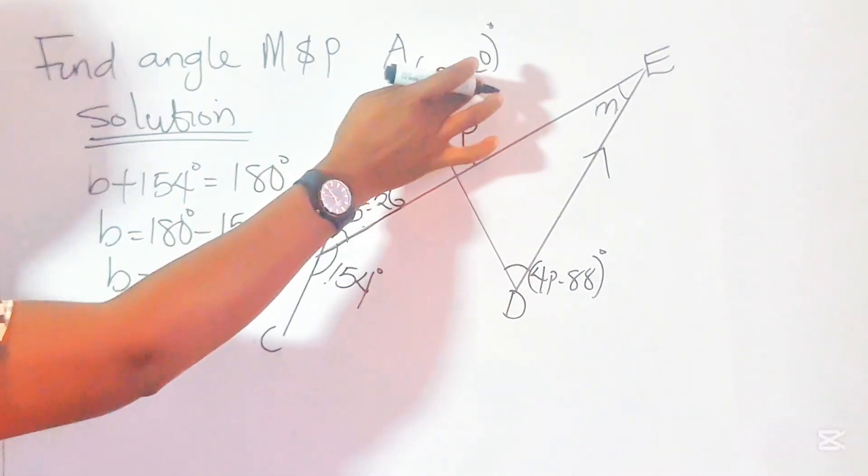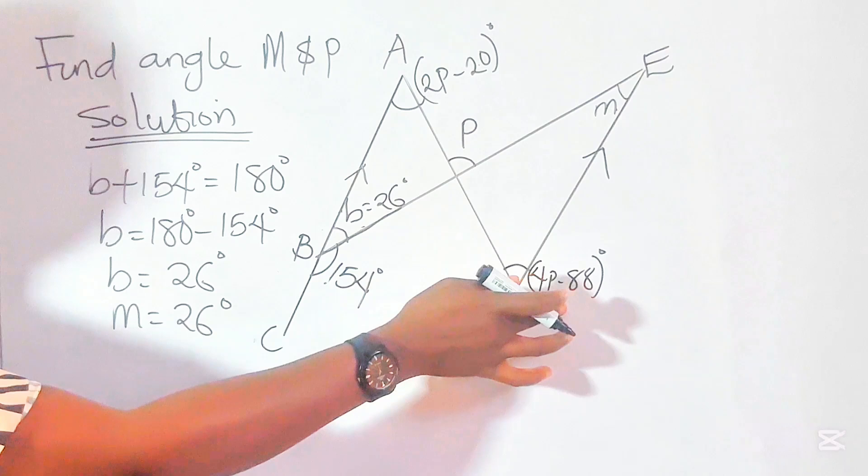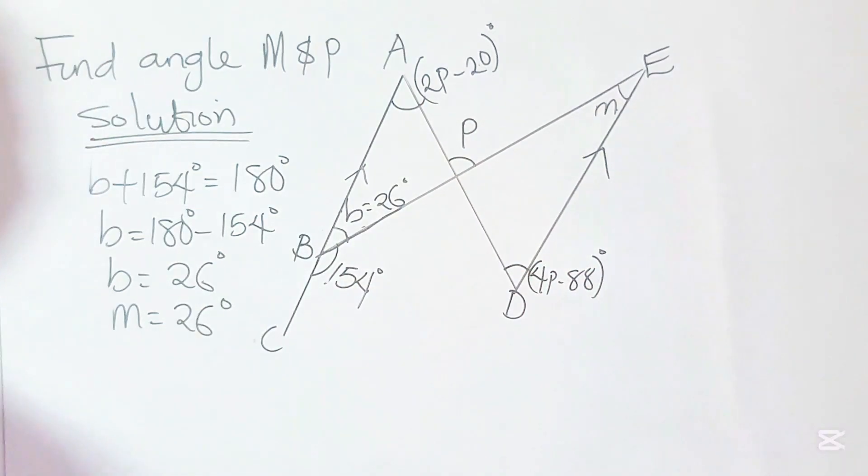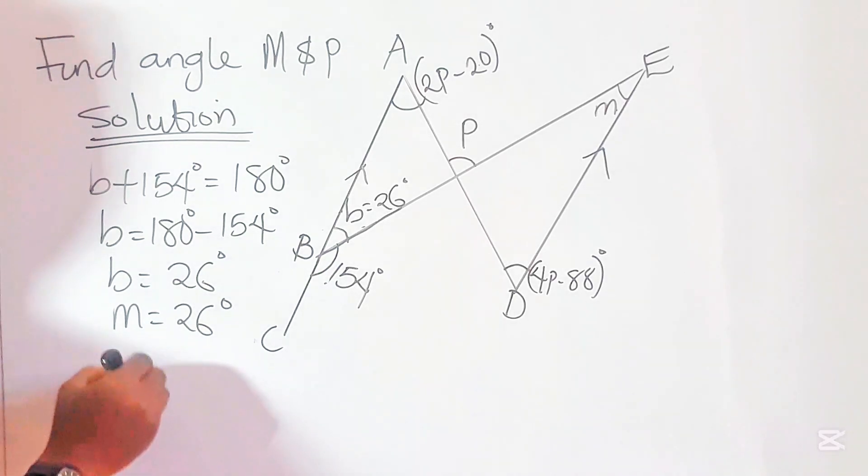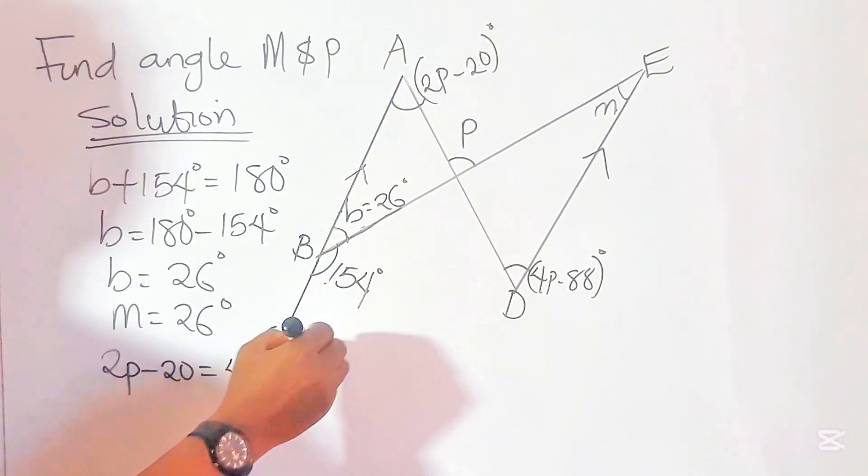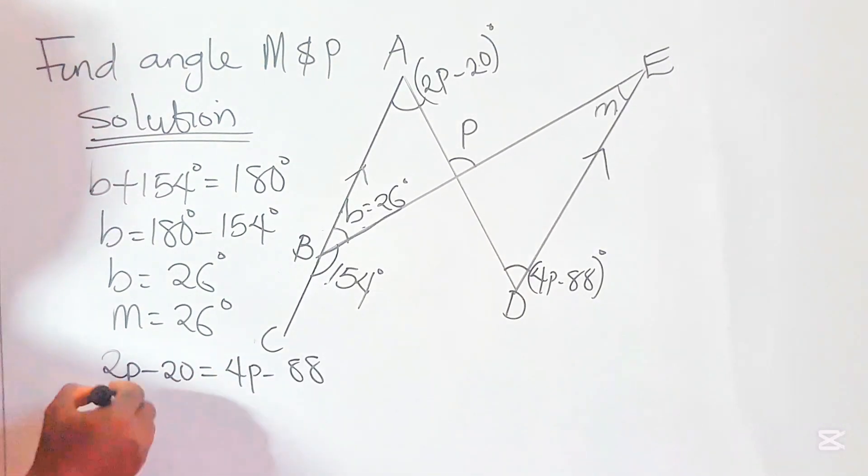Now we have 2P minus 20 and 4P minus 88. These two angles are equal because they are alternate. So let's equate them together. We have 2P minus 20 equals 4P minus 88. Now let's group the like terms.